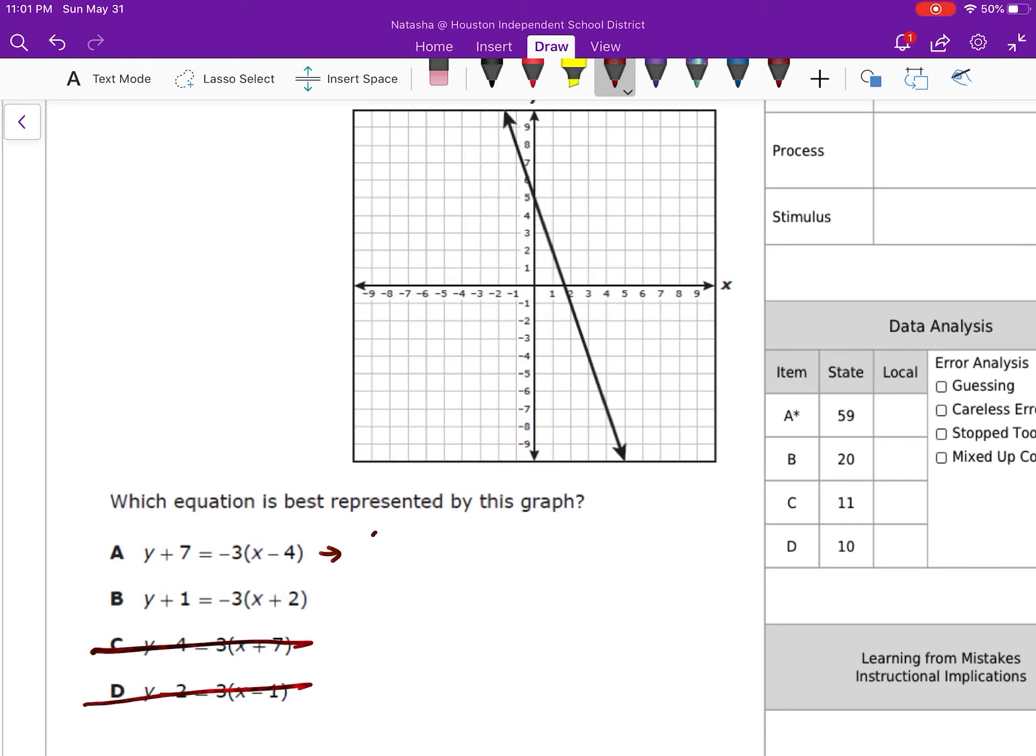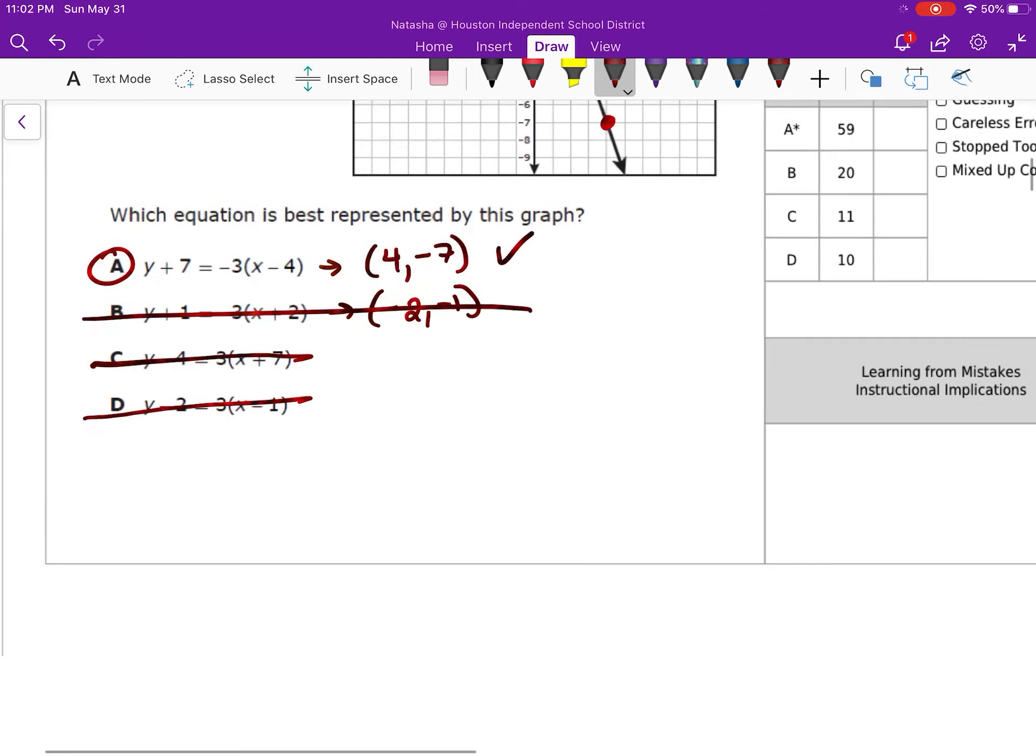Now I'm going to look and see which of these points, so this is going to become 4, negative 7, and this is going to become negative 2, negative 1. So negative 2, negative 1, that's there, that's definitely not it. 4, negative 7 has to be it, but let's check. I'm going to go to 4 and then down to negative 7, which is right there, definitely it.